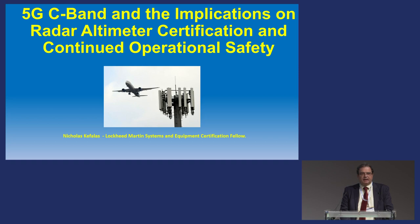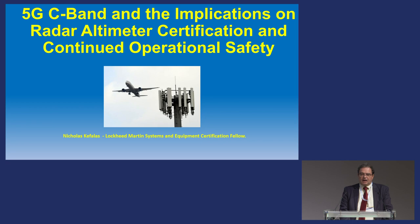Today's focus is on a topic you've probably heard a lot about in the last couple of years regarding the cellular expansion into the 3.8 gigahertz regime, which is also shared by the RAD altimeter frequencies operating across the world — between 4.2 and 4.4 gigahertz. We'll look at all the investigations that have happened, what regulatory actions the FAA has taken, what RAD alt manufacturers have done, and what OEMs and operators have been doing.